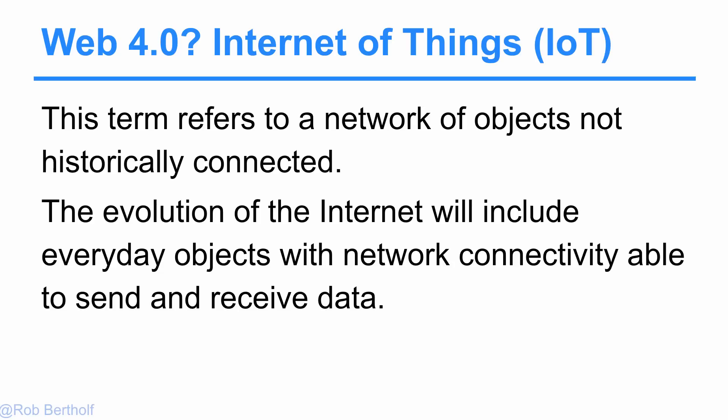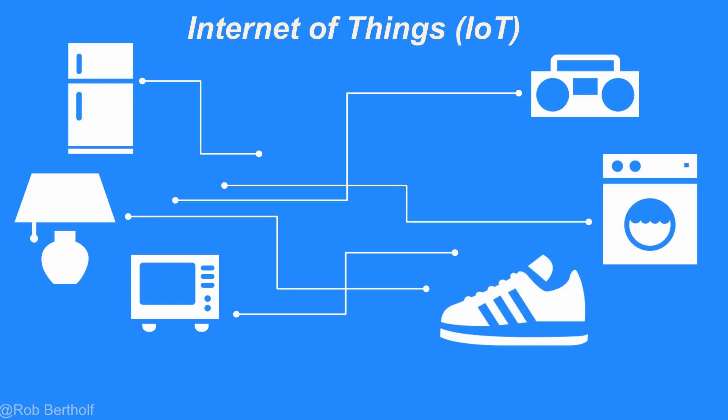The next evolution, Web 4.0, is the idea of an Internet of Things, or IoT. This term refers to a network of objects which haven't historically been connected to the internet. The evolution of the internet will include everyday objects with network connectivity to send and receive information and data. For example, your refrigerator could tell you it's out of milk, or when you walk in the room, your lights could go on. This idea is that everything we use could have its own IP address and be reporting and receiving information for us.